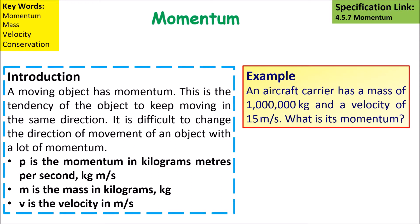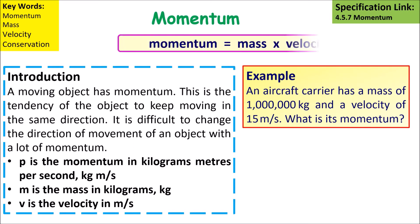A moving object has momentum — this is the tendency of an object to keep moving in the same direction. It is difficult to change the movement of an object with lots of momentum.